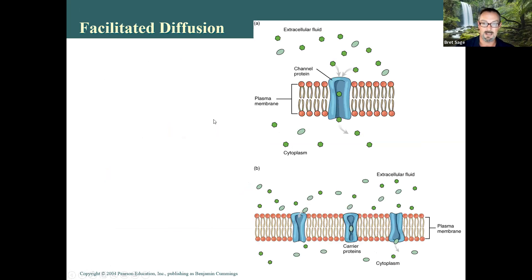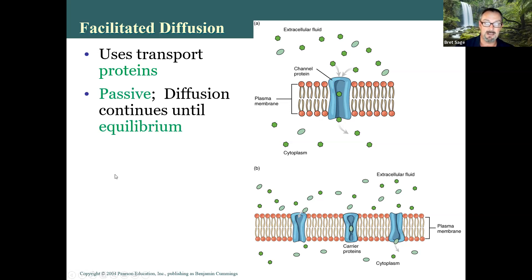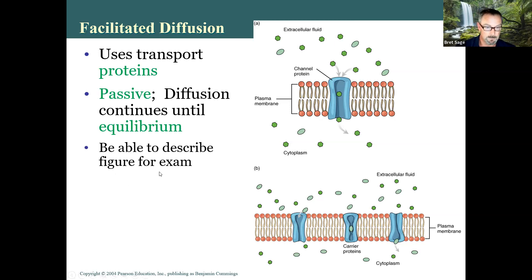Facilitated diffusion means that even though there's a concentration gradient, a molecule still needs a protein to help move it from outside to inside — it can't go on its own. It uses transport proteins. Facilitated diffusion is passive, meaning it doesn't require energy from the body; it uses just the concentration gradient where there's more on one side than the other to drive the process.